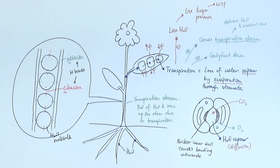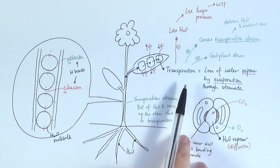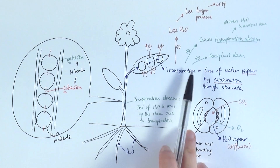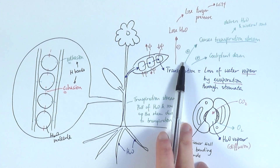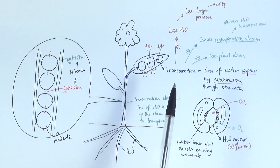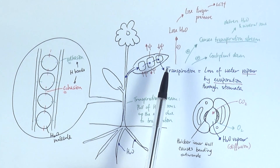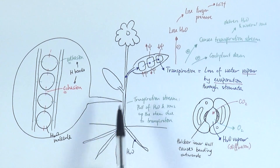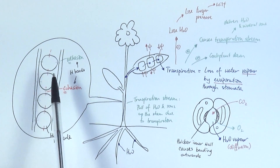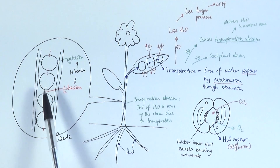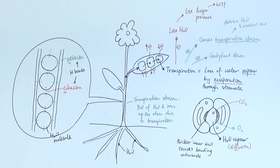Quick recap: transpiration is the loss of water vapor by evaporation through the stomata. Two good things about it: it cools the plant down to avoid enzymes being denatured, and it causes the transpiration stream to deliver water and ions to different parts of the plant. The downside is that the plant loses water, which in extreme cases causes wilting. The transpiration stream refers to the pull of water and ions up the xylem due to transpiration replacing water lost in the leaf cells. Within the xylem, we have cohesion — hydrogen bonds between water molecules — and adhesion — hydrogen bonds between water molecules and the xylem wall.